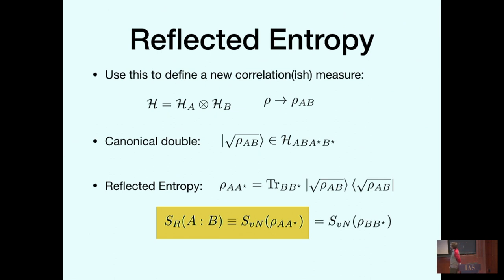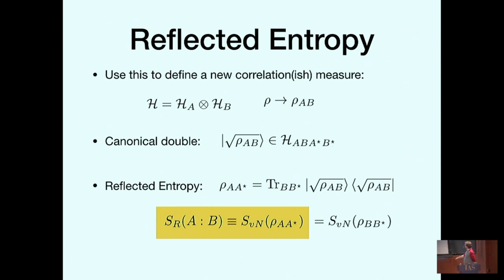To define this new correlation measure, we're going to take the Hilbert space to be a tensor product of A with B, take my density matrix to be rho_AB — some mixed state on the bipartite system — and then take this canonical doubling. Then I calculate an entropy for AA*. When I double, my Hilbert space is now AB A* B*, and then I calculate von Neumann entropies for AA*. I trace over BB*, get some density matrix, and calculate trace rho log rho. This is my new quantity — we called it the reflected entropy.